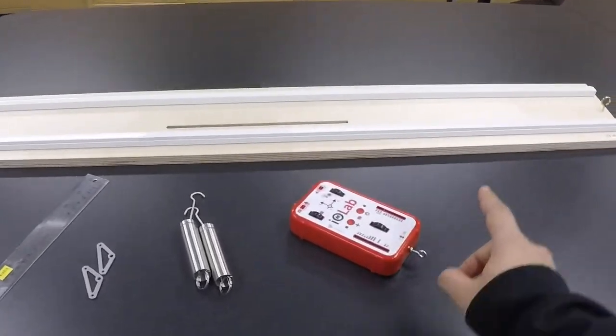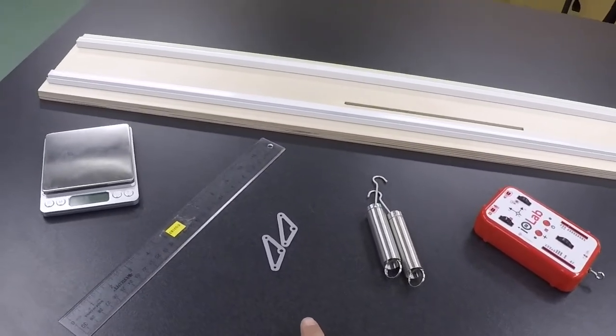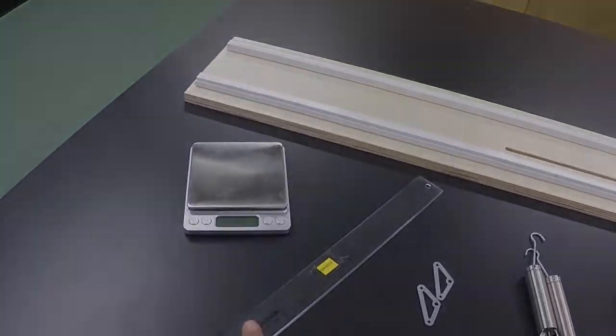You will need the IO-Lab, the track, some springs, the triangle connectors, a ruler, and also a scale.